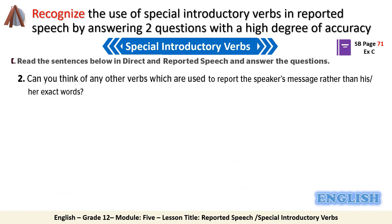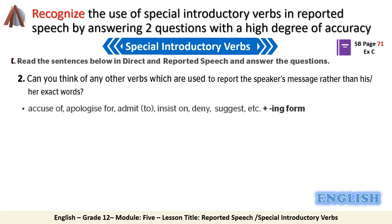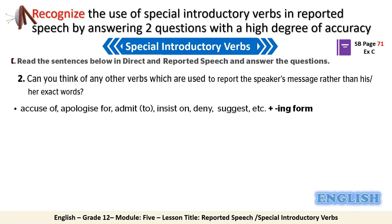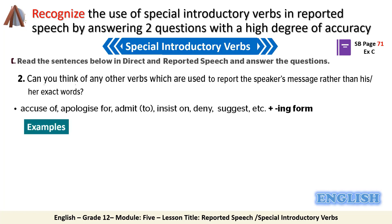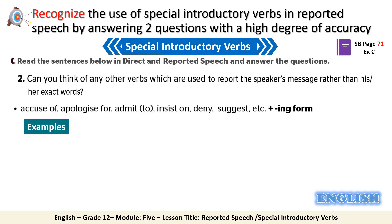The third group of verbs includes: accused of, apologize for, admit to, insist on, deny, and suggest. These verbs require the use of the -ing form of the verb.